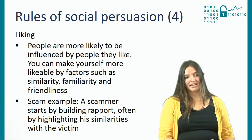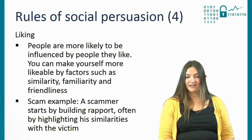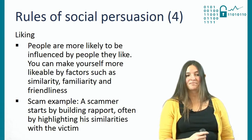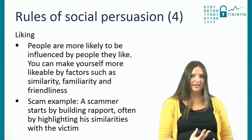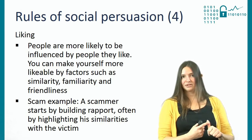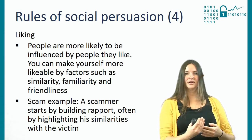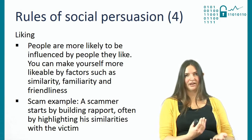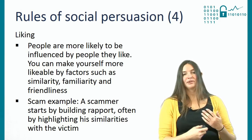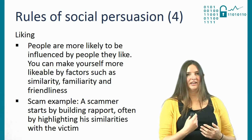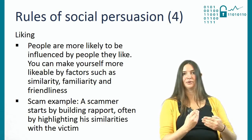The third principle is liking. People are more likely to be influenced by people they like than people they don't like. You can make yourself more likable by being friendly, being similar to the person, or more familiar — the more you've seen someone, the more you start to like them. A scammer can start by building rapport and being friendly, or highlighting similarities between themselves and the victim — for example, in the context of Lonely Hearts scams.